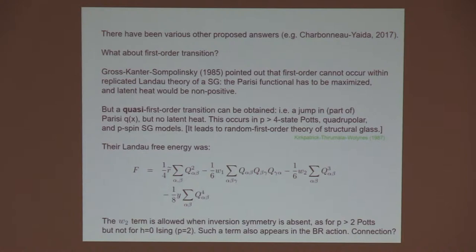But what I will call a quasi-first-order transition could occur. That would involve a jump in some part of Q of X, but no latent heat. In finite dimensions, it would mean the correlation length stays finite at the transition. This is known to occur in P bigger than four-state POTS models and some other models. It's connected with the random first-order theory, which we'll be hearing about later in this meeting.